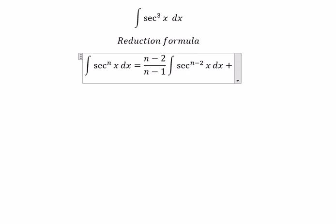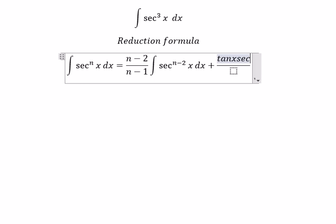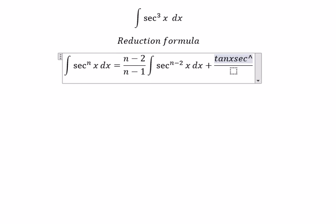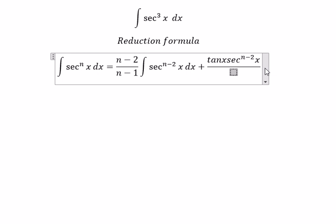Plus tan x multiplied with sec x to the power of n minus 2, all over n minus 1.